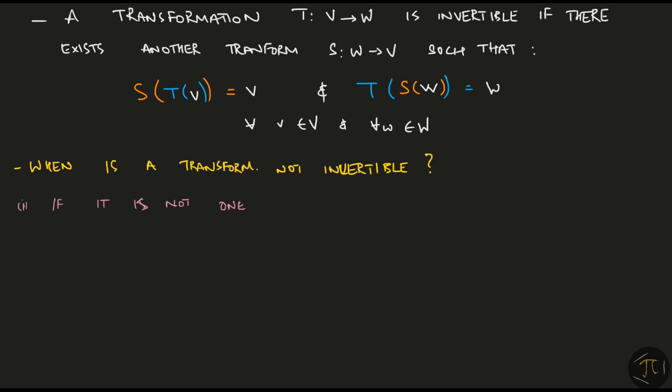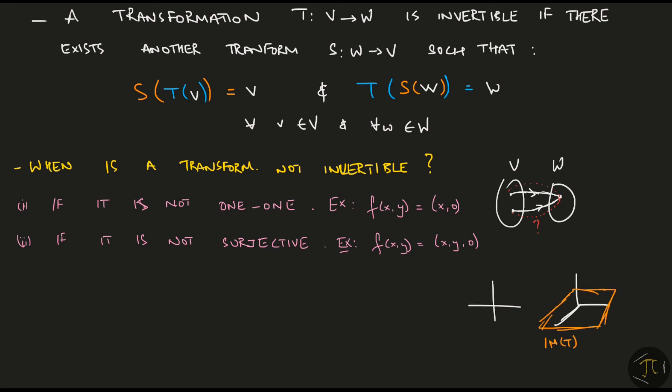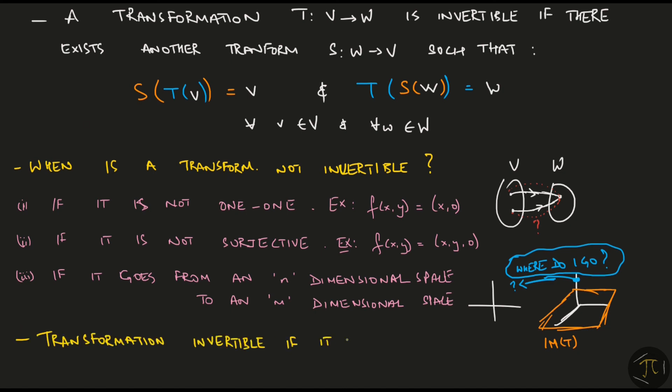Now let me ask when is the transformation not invertible? Well, if it is not 1-1 or injective, an example would be a projection transformation like f(x,y) equals (x,0). Going from V to W seems easy but coming back we don't know which way to go. Secondly, if it is not surjective, remember our example earlier of mapping everything in the 2D space onto the xy plane in the 3D space? When running the reverse transformation, we have points in the codomain which don't know where to go. And third, if it goes from an n-dimensional space to an m-dimensional space, that is the domain and the codomain don't have the same dimension. The examples above are valid for this case as well. In short, a transformation is invertible if it goes from an n-dimensional to n-dimensional space and it is bijective as well.